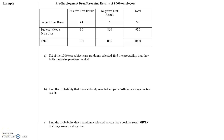In section 3.4 we will continue talking about contingency tables. This contingency table we were introduced to in section 3.1. Let's take a look at part A. If two of the 1,000 test subjects are randomly selected, find the probability that they both had false positive results.